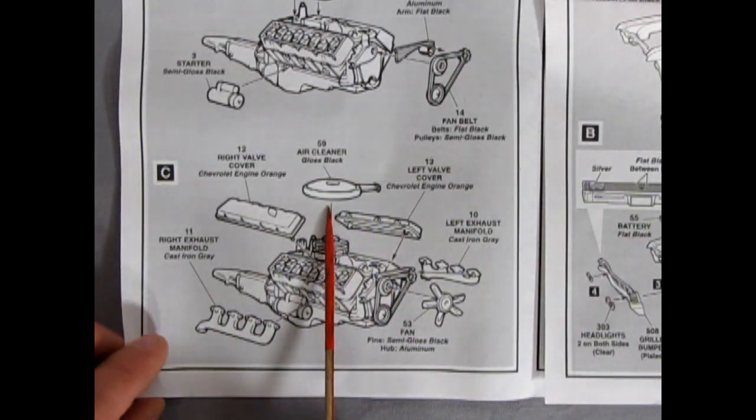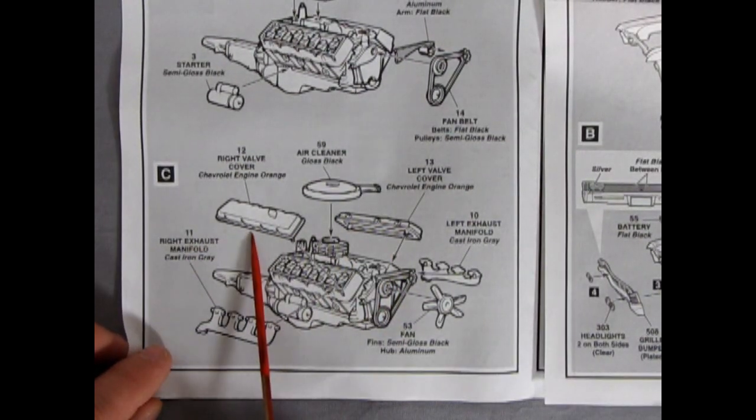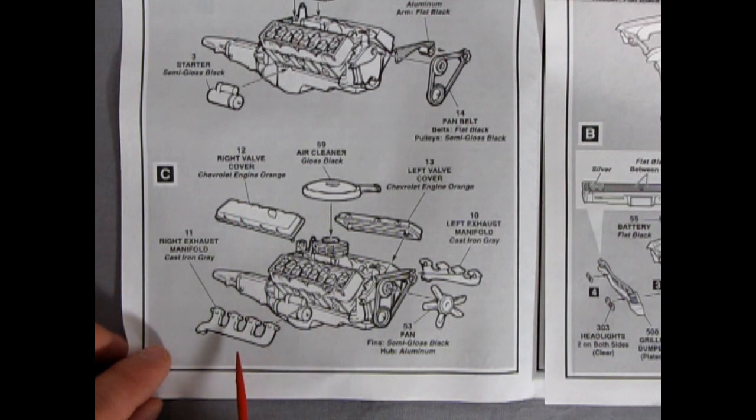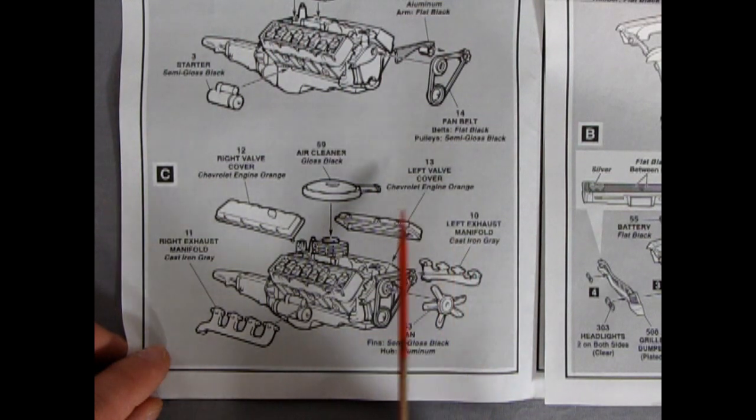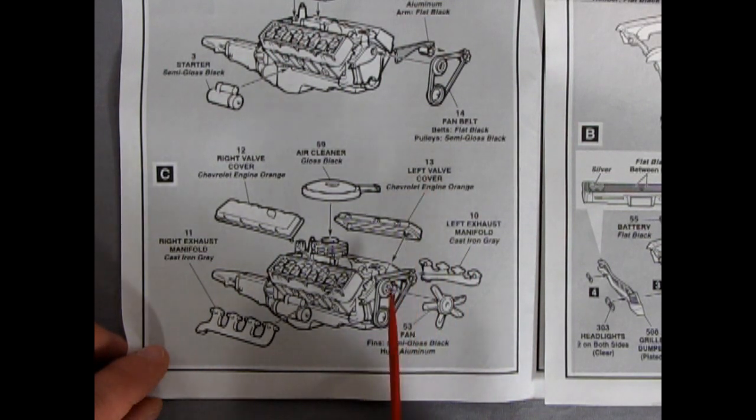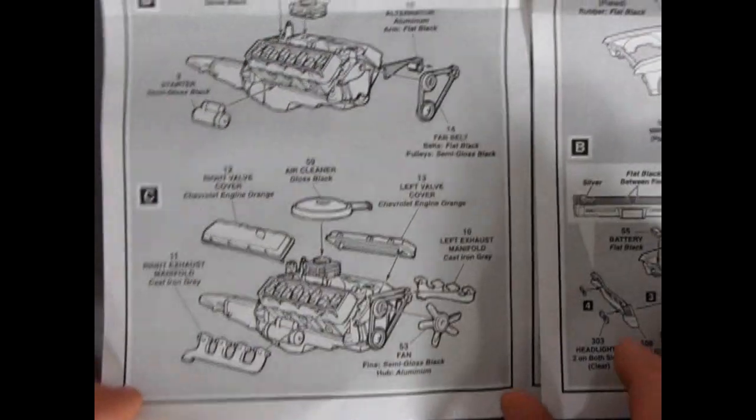There's our engine with the air cleaner and the chrome valve covers going on there. Exhaust manifolds and it says to paint them cast iron gray. It's nice it has the painting right underneath of the parts. There's your fan as well. Going into those fan belts and pulleys.